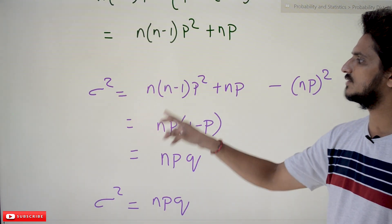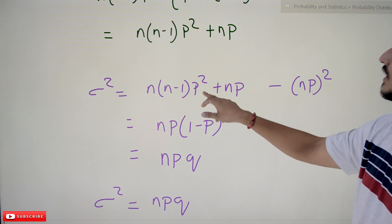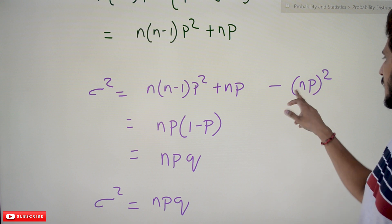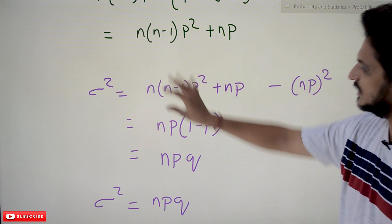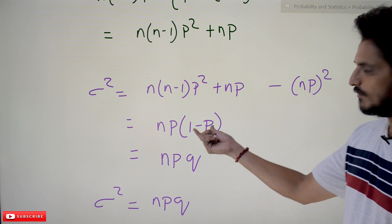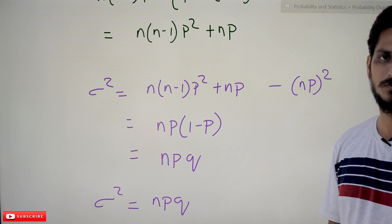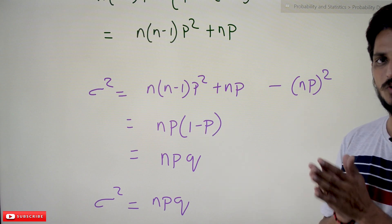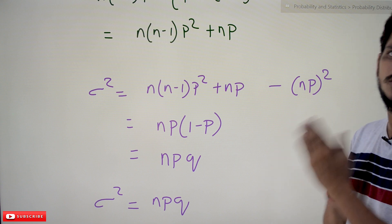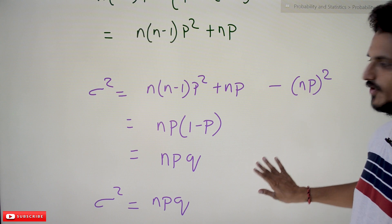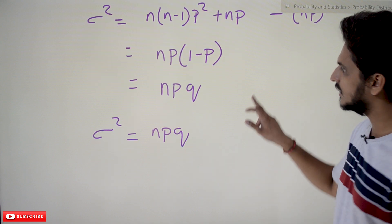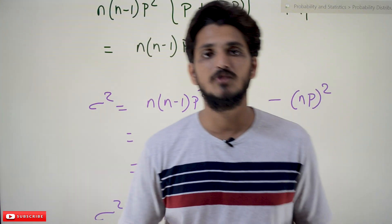The variance is σ² = E[X²] − (np)² = n(n−1)p² + np − n²p². Expanding and simplifying: n²p² − np² + np − n²p² = np − np² = np(1−p). Since we call 1−p = q, the variance of the binomial distribution is σ² = npq.